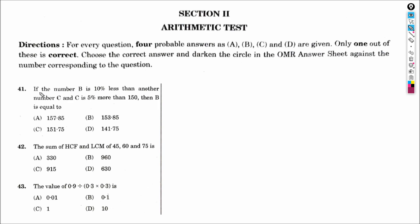Let us understand this question. If the number B is less than another number C, and C is 5% more than 150, then what is B? We will calculate C first.